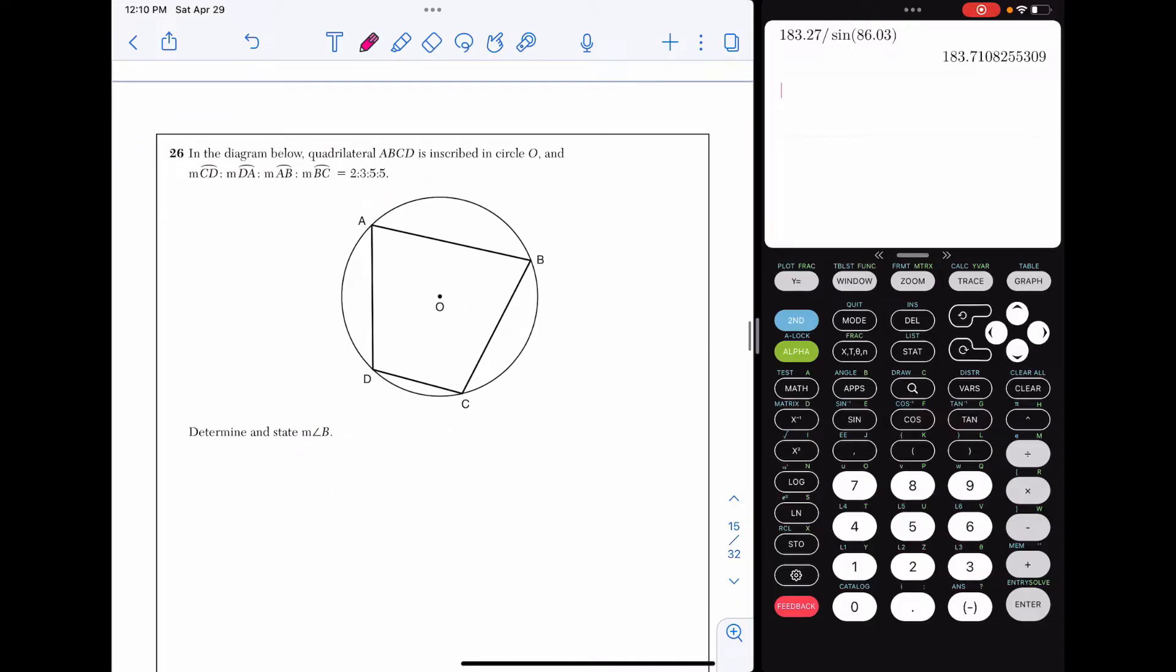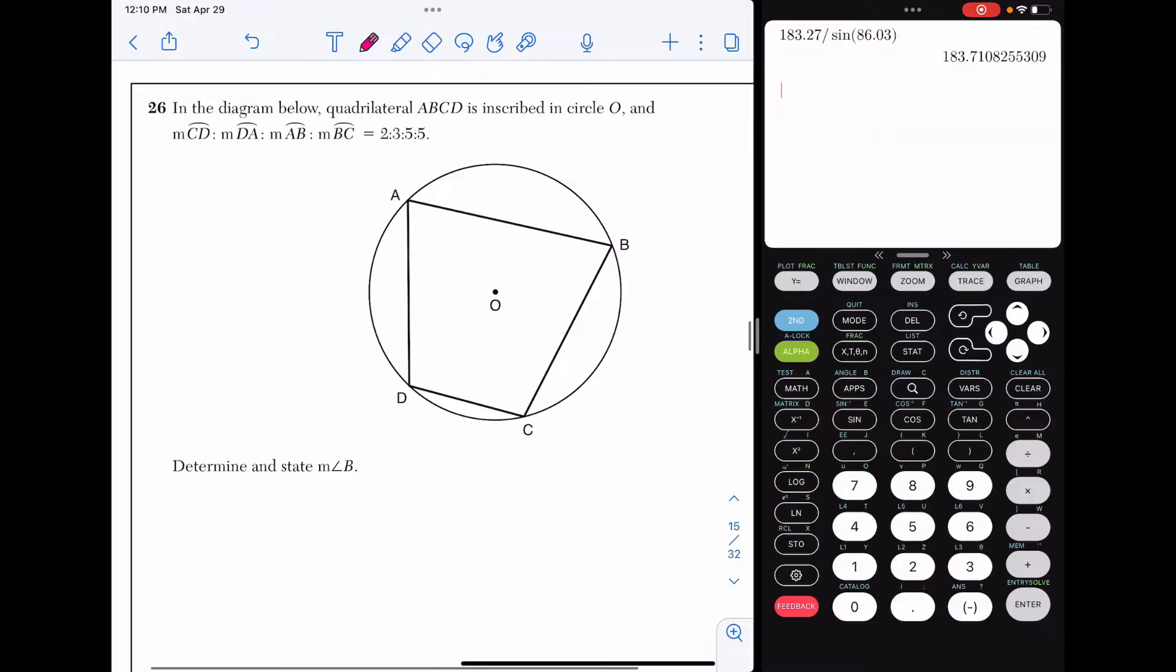Question 26. In the diagram below, quadrilateral ABCD is inscribed in circle O, and we're given the ratio of all of the arcs. Anytime you're given ratios, rather than label CD with 2, let's label it with 2x. We're going to match up the two pieces that are listed first. So CD, we're going to put 2x. DA, we're going to put 3x. AB will be 5x. And BC will be 5x.